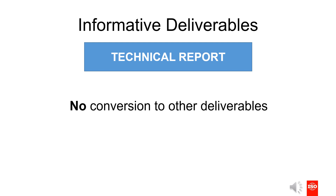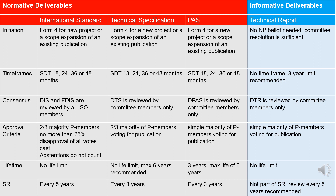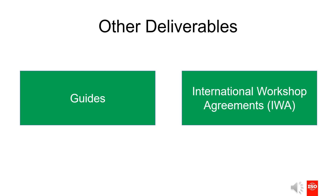Converting a TR into another deliverable is usually not possible, as the content is not likely suitable as a normative document type. Make sure you check with your technical program manager and editor if you consider such a conversion. While TR, PAS, TS, and IS are ISO's most common deliverable types, you may have also heard about guides and international workshop agreements. These do not fit into the categories we just discussed.